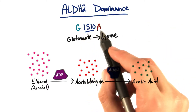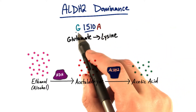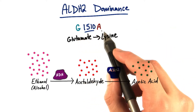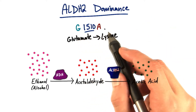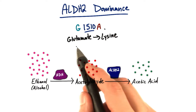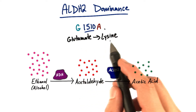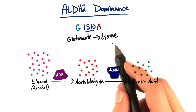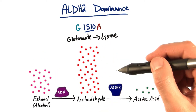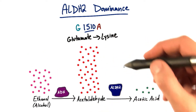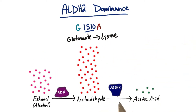The G1510A guanine to adenine mutation causes a glutamate to lysine change in amino acid, which drastically reduces the activity of the ALDH2 enzyme catalyzing this second step.